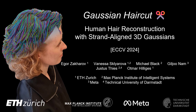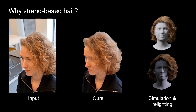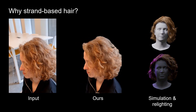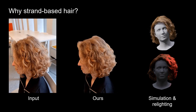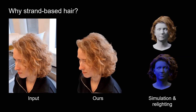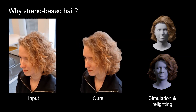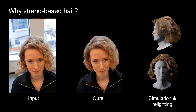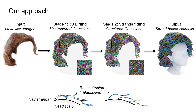We present a new method for physically accurate human hair reconstruction called Gaussian Haircut. Our method achieves a level of photorealism similar to neural implicit and splatting approaches, while also allowing the reconstructed geometry to be physically simulated, relit, and rendered in modern computer graphics engines.